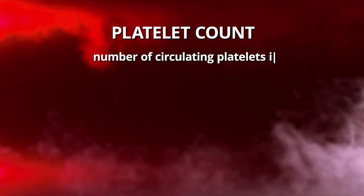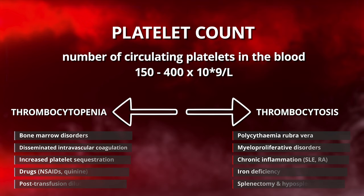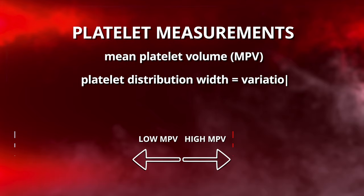The last data set we receive from the full blood count is about platelets. Platelets are essentially little chunks of cytoplasm derived from megakaryocytes in the lungs and bone marrow, which react to bleeding and help form clots. We start with the platelet count — the number of platelets circulating in the blood — where low counts suggest reduced clotting ability and high counts suggest clots are actively being formed. We also have mean platelet volume, measuring the size of platelets, and platelet distribution width, indicating the variation in size of those platelets.